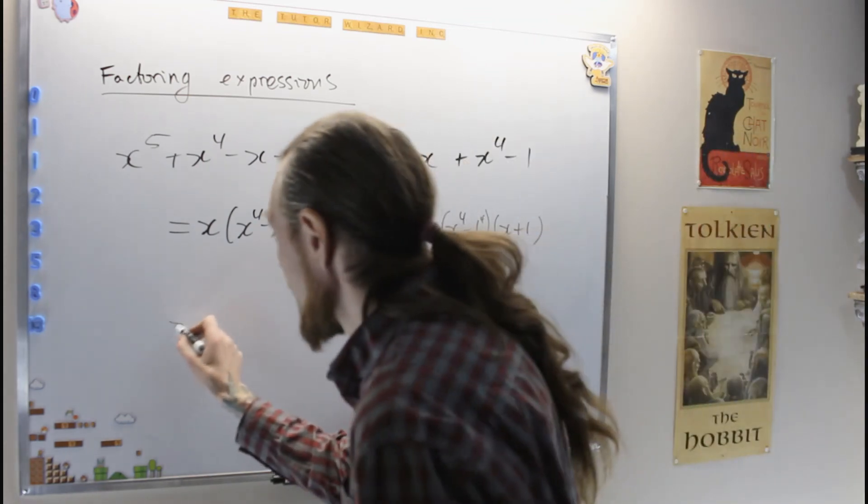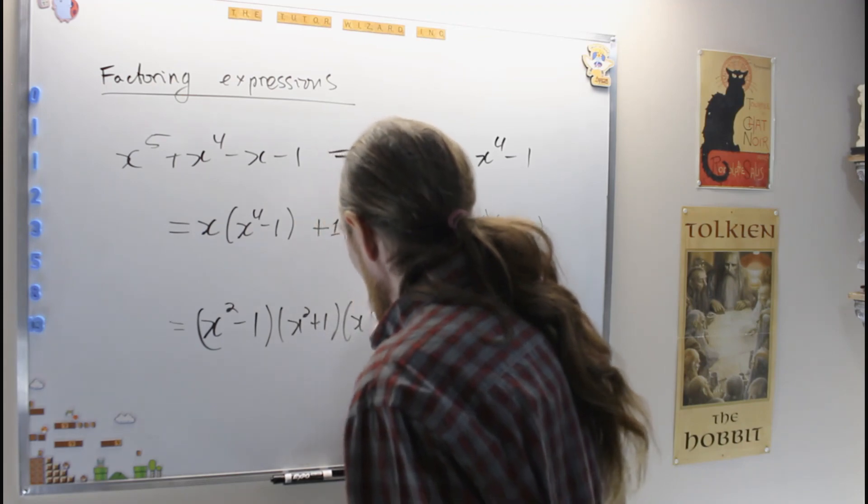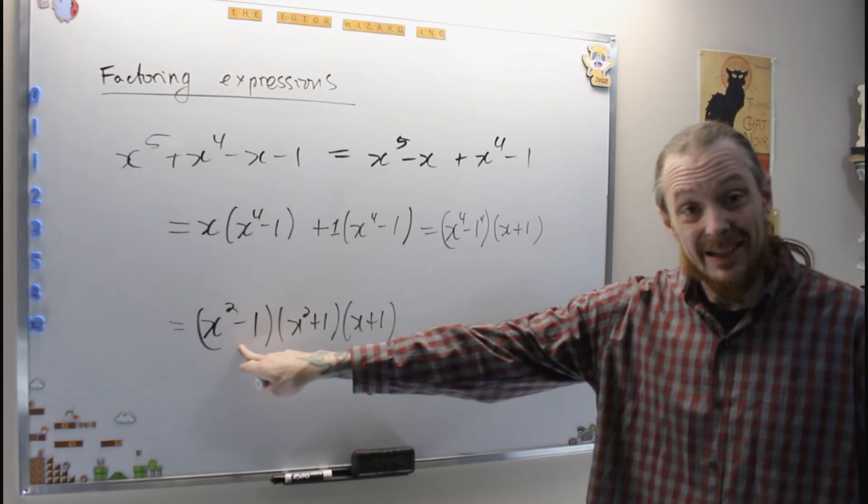But now we have that this is x squared minus 1, x squared plus 1, and then x plus 1 which we still had. And now this is all again a difference of squares.